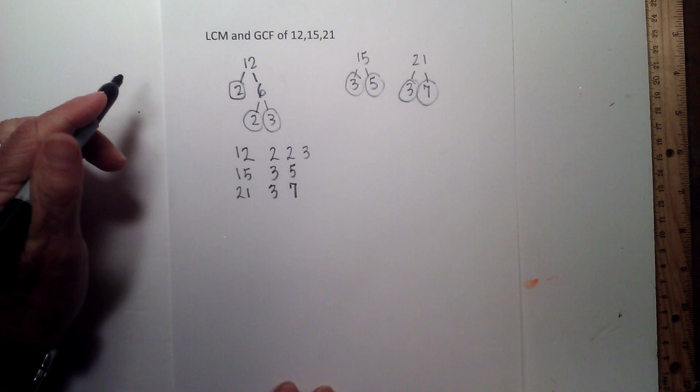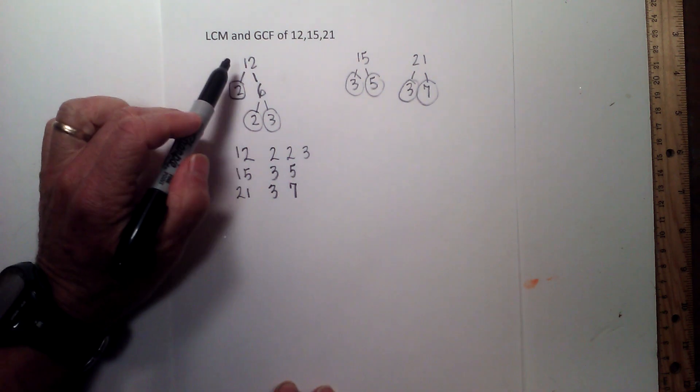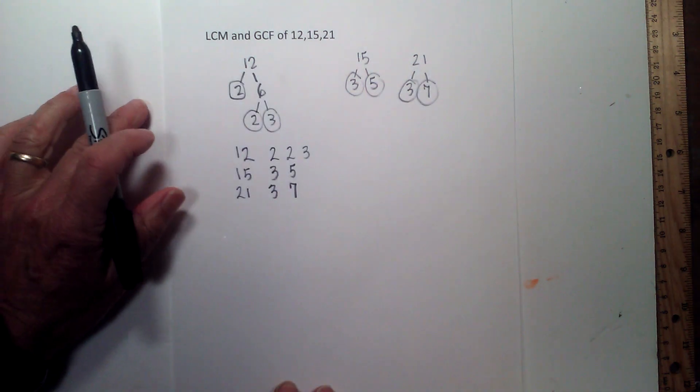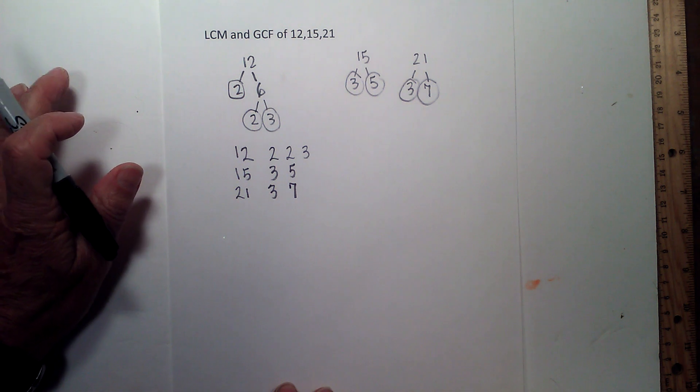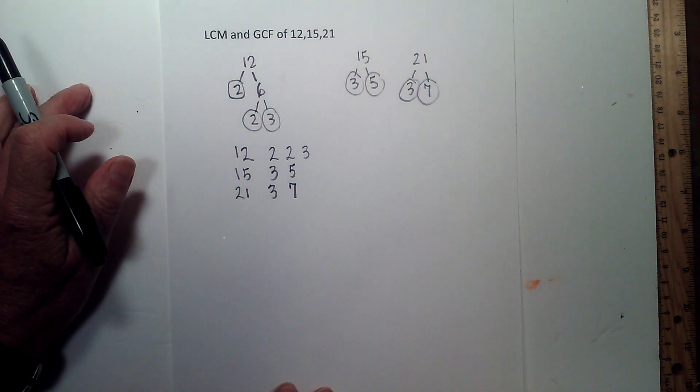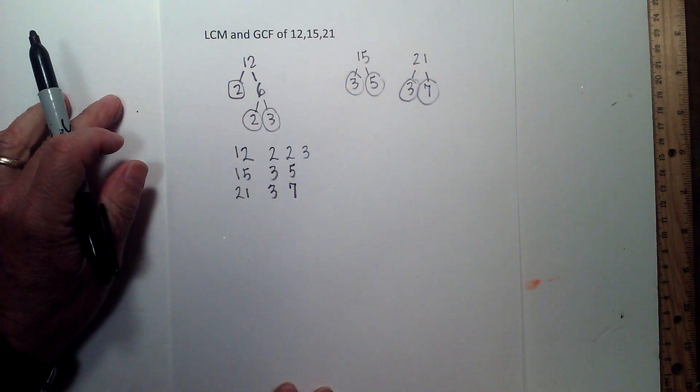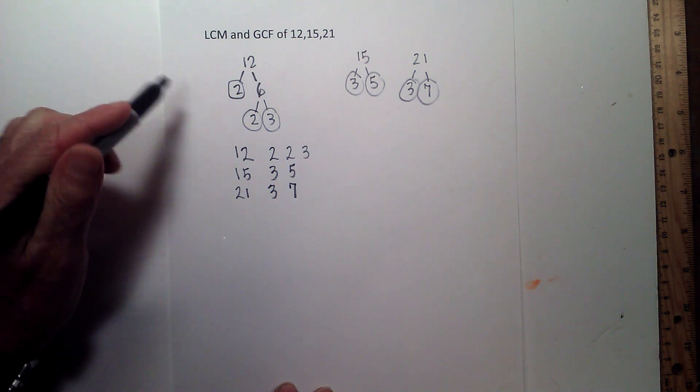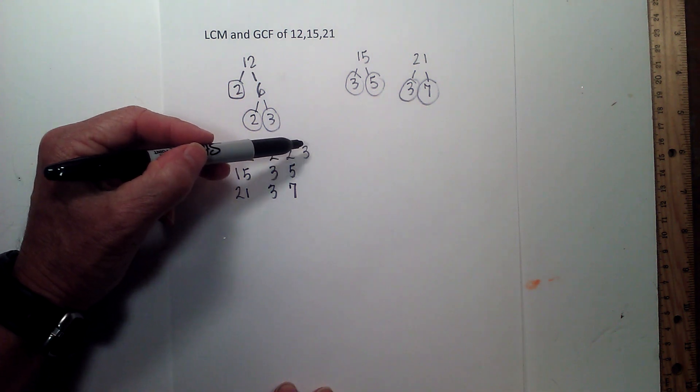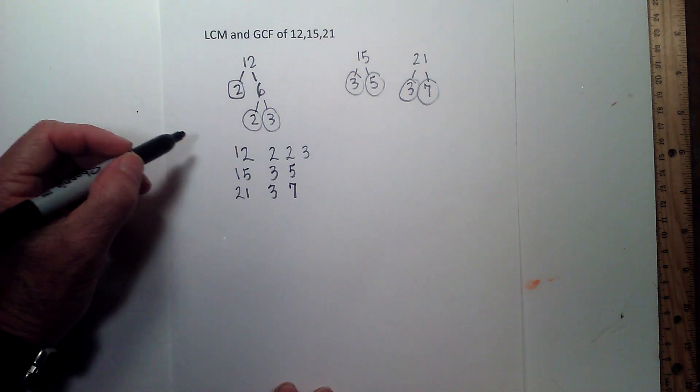Now the lowest common multiple is the largest number that all 3 numbers will divide into with no remainder, or a remainder of 0. So in order to find it, I just multiply all the prime factors together, except if one number is in all 3 of the numbers, then only multiply it once.